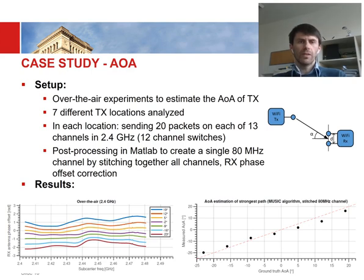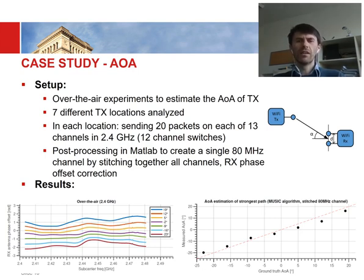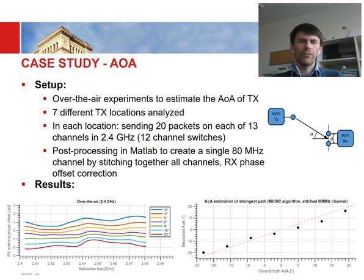As a proof of concept we implemented angle-of-arrival estimation using the MUSIC algorithm. We selected seven different transmitter locations, and for each position sent 20 packets on all 13 channels in the 2.4 GHz band. In the lower-left figure we stitched together measurements from the different 20 MHz channels into a single 80 MHz channel. After phase offset correction with the proposed algorithm we obtain smooth curves. On the right-side figure, feeding these corrected phase offsets into the MUSIC algorithm yields the angle of arrival, showing a good match between ground truth and measured angle of arrival — confirming practical usefulness.